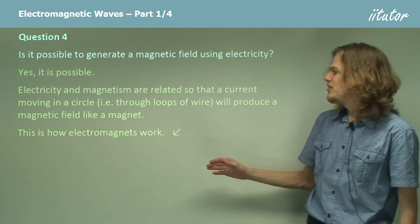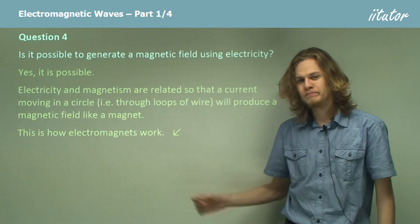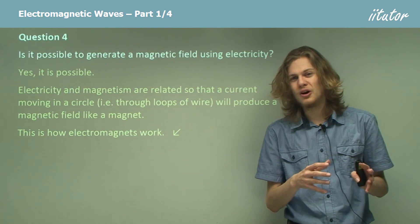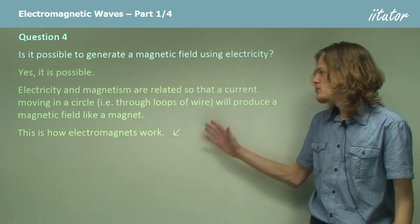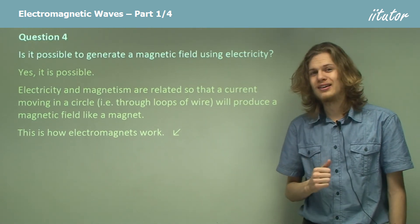As it turns out, the more current we run through that wire, the stronger the magnet will be. So we can use loops of wire to create very strong magnets indeed.